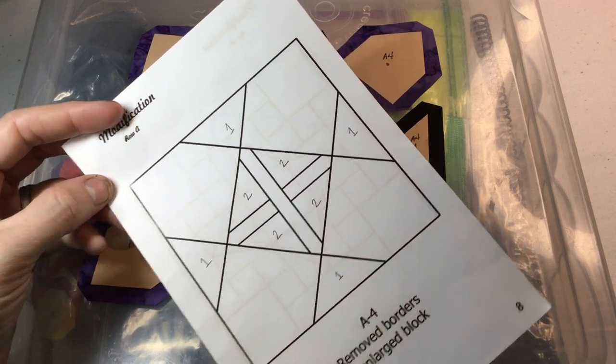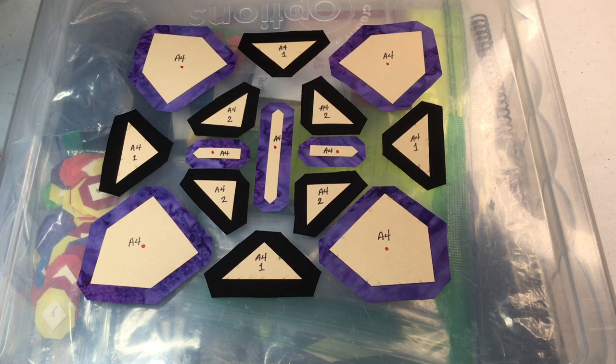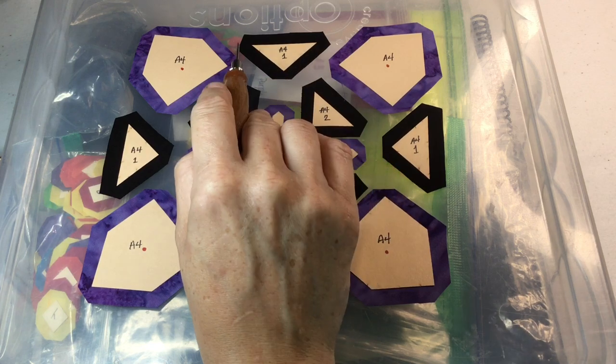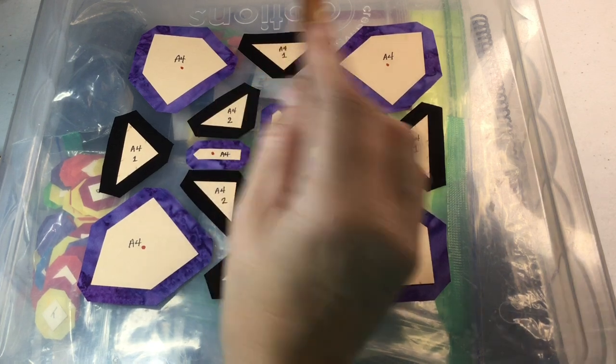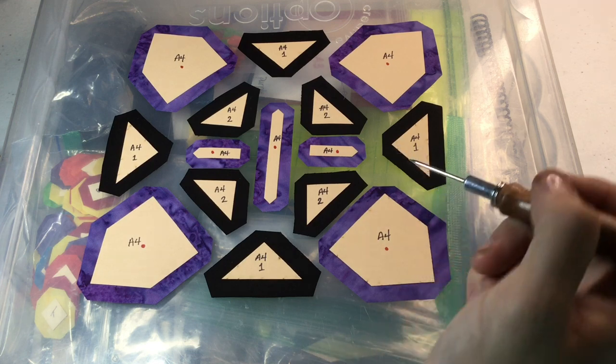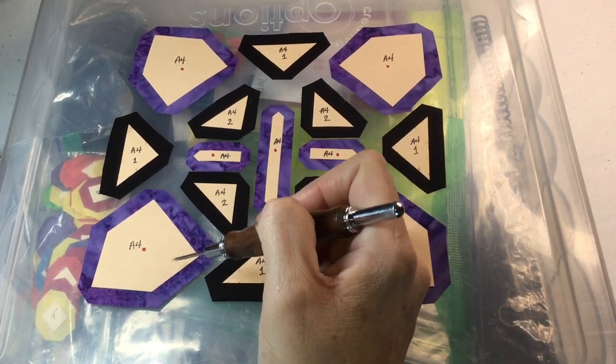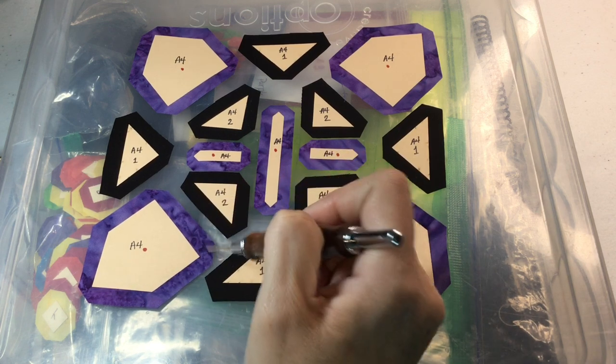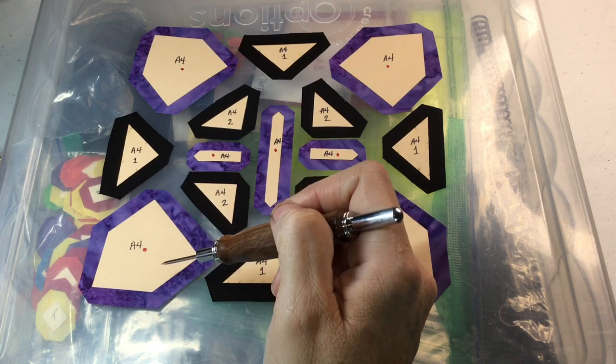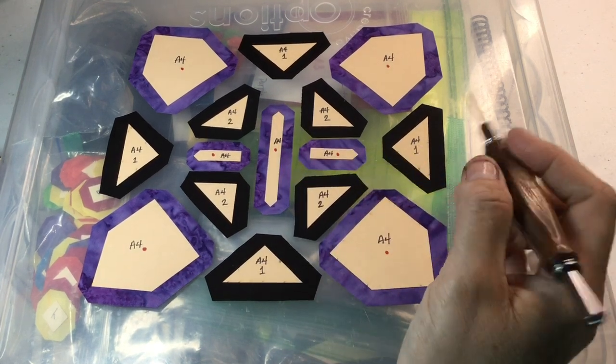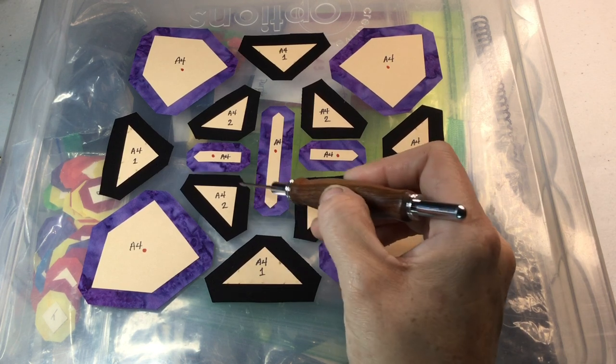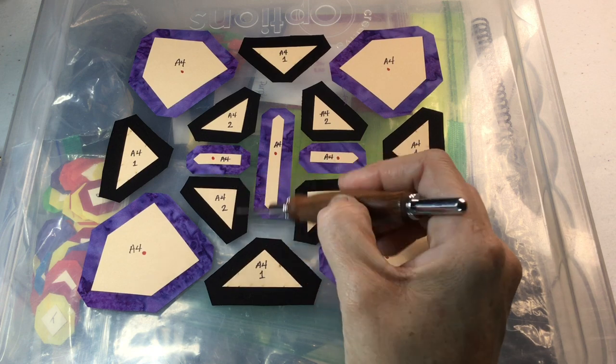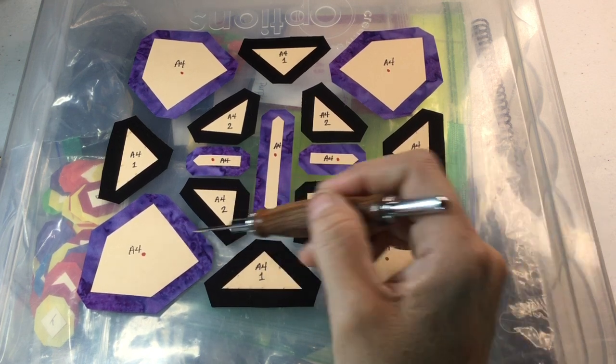For my basting, I'm going to baste the hypotenuse first of the triangles, and then the legs, which makes the tags go away towards the sashing, which will take them out of the seams. For these triangles, I'm going to also do the hypotenuse and then the legs, because then the tags will face these pentagons.